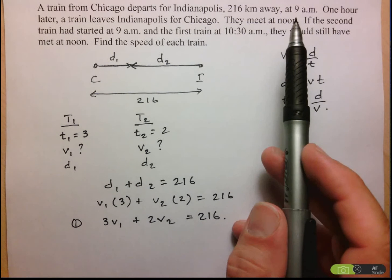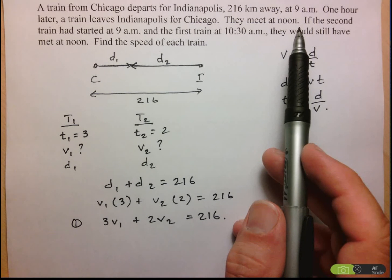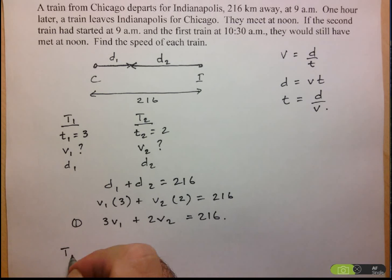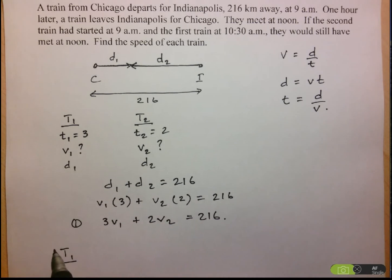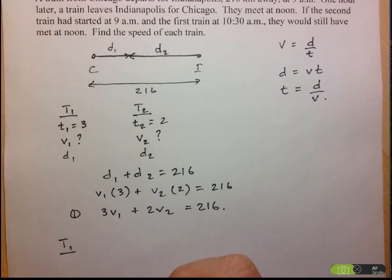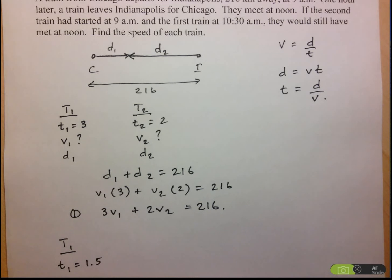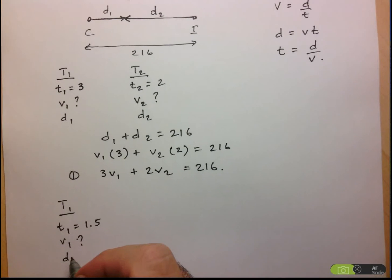Now I'm given a second scenario, so hopefully this will help me come up with a second equation so I can create a system. So let's take a look at what's happening with train 1 and train 2 in the second scenario. Now, even though the distances and the times aren't going to be the same, I'll still use the same variables, because the speeds are the same, and I'm hoping to end up with an equation only involving speeds. The second train had started at 9 a.m. and the first at 10:30 a.m. That means that the first train is only traveling for 1.5 hours, because it starts at 10:30, and they meet at noon.